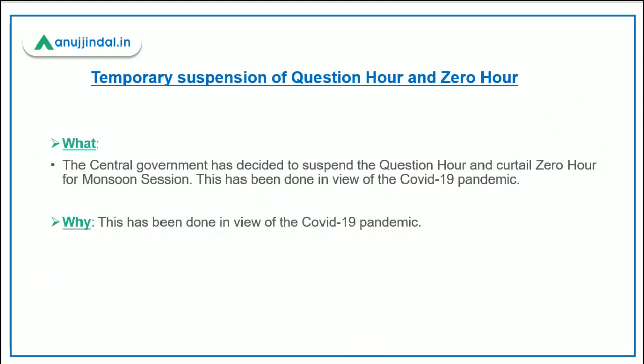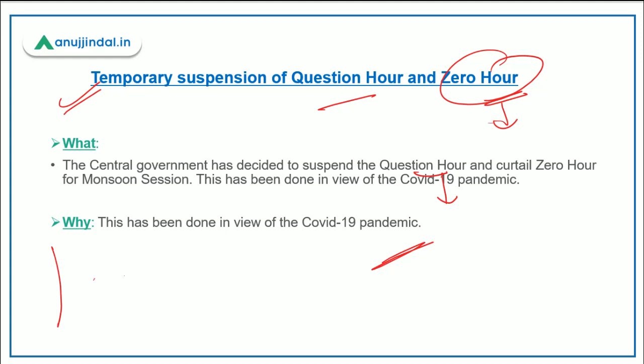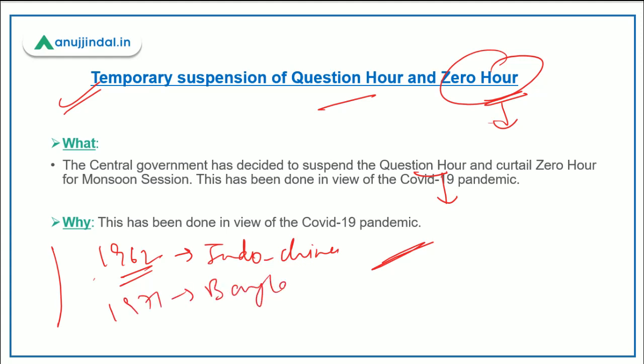The government has temporarily suspended the Question Hour and curtailed the Zero Hour — reducing its time limit. Within the suspension, written unstarred questions will be submitted but oral starred questions will not be permitted. According to the government, this has been done in view of the COVID-19 pandemic. This is not the first time Question Hour has been suspended — it was suspended during the 1962 Indo-China War and during the 1971 Bangladesh Liberation War. However, this time the reason cited is COVID-19, to complete the session as quickly as possible.